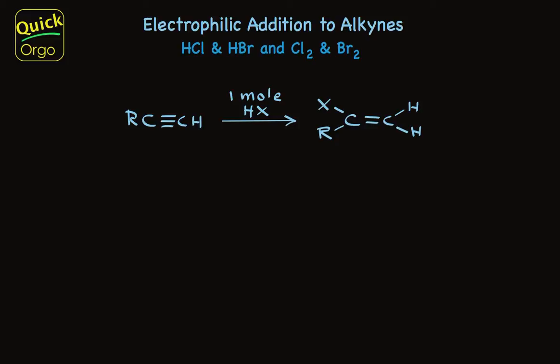If you're familiar with the addition of hydrogen halides to alkenes, you'll feel right at home with what you see here. When a limited amount of hydrogen halide is mixed with a terminal alkyne, the product is a vinyl halide.